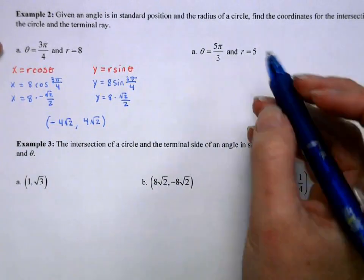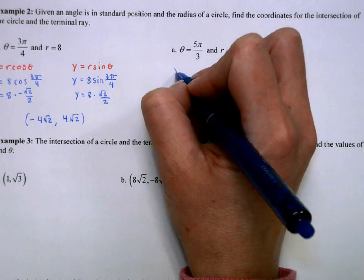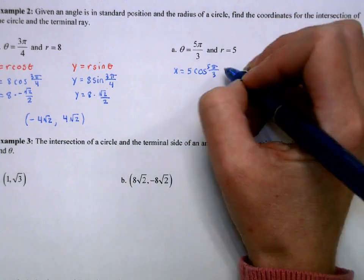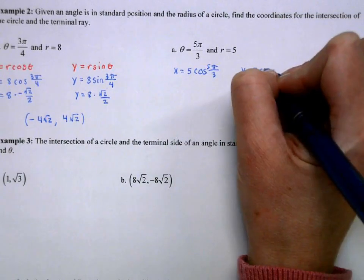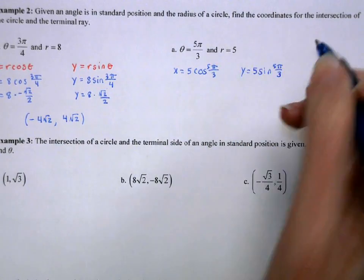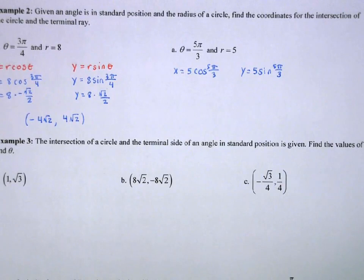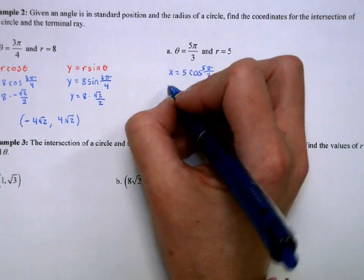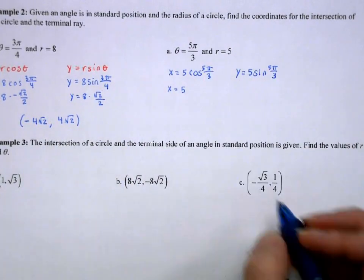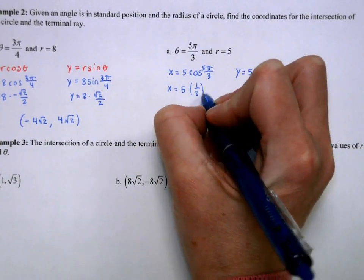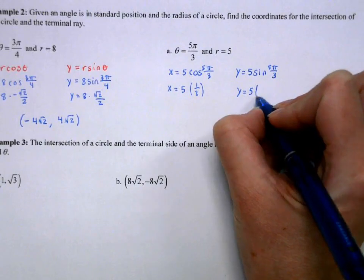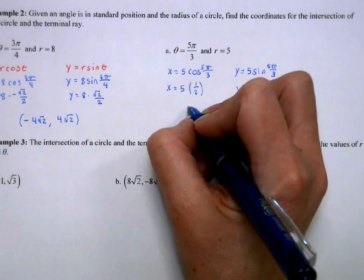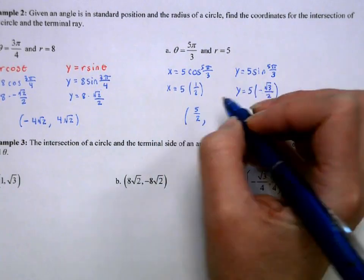For r = 5, θ = 5π/3: x = 5·cos(5π/3) and y = 5·sin(5π/3). Since 5π/3 has denominator 3, it's closer to the y-axis, and it's in the fourth quadrant, so x is positive and short (1/2) and y is negative and long (−√3/2). The coordinates are (5/2, −5√3/2).